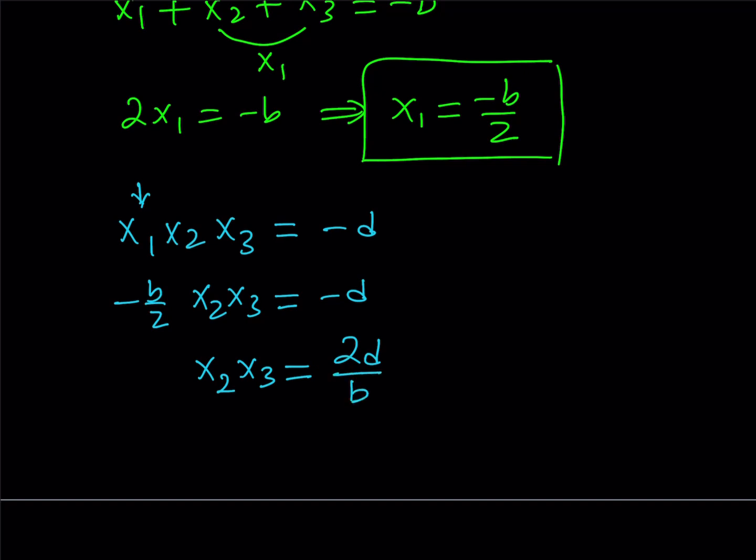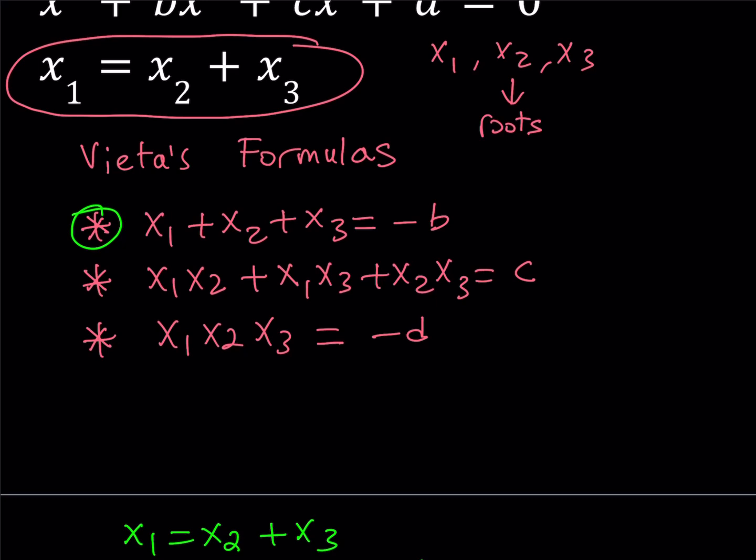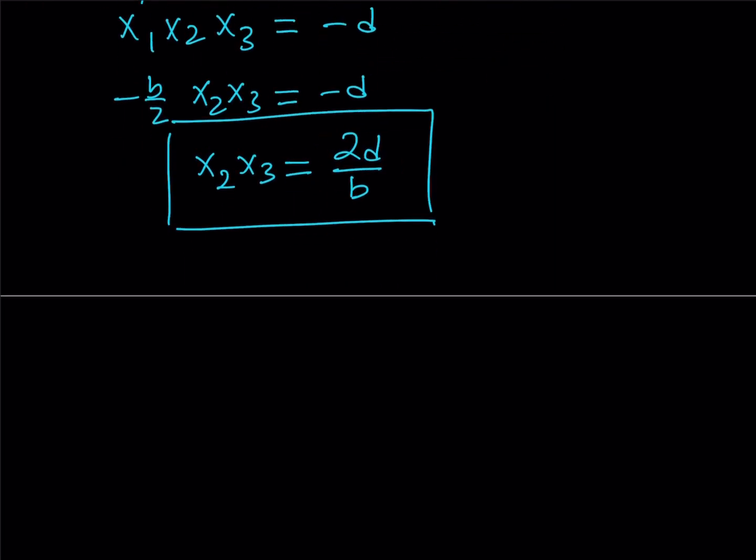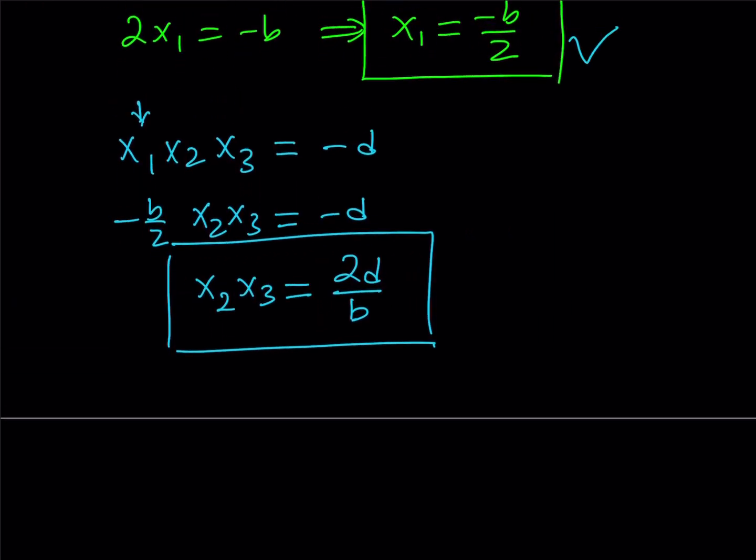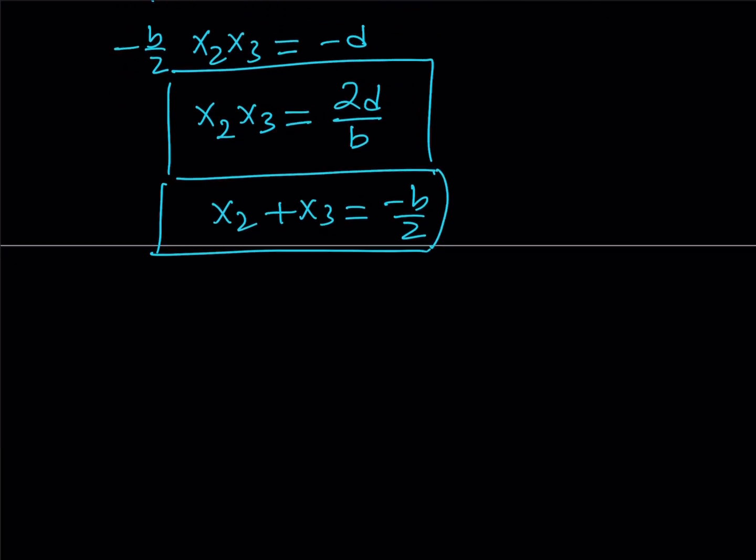So this is my x2*x3. Now what does that mean? I have x1, I have x2 times x3. Do I have x2 plus x3? That would be nice, and we do. Because remember, the given condition was x1 equals x2 plus x3. Since we already found x1, which means we also found x2 plus x3. So since x1 equals this, that implies x2 plus x3 is also equal to negative b over 2. Now what is that supposed to mean? These two relationships tell you we're dealing with a quadratic equation.